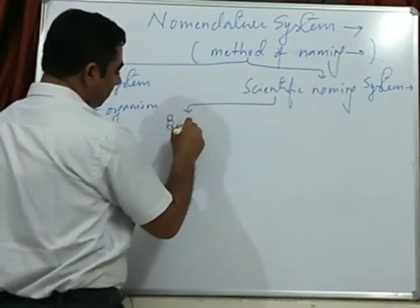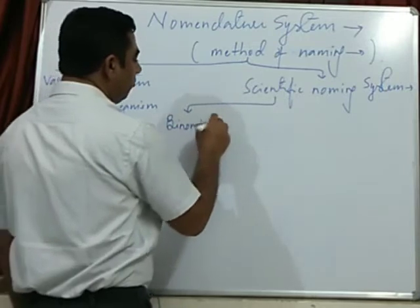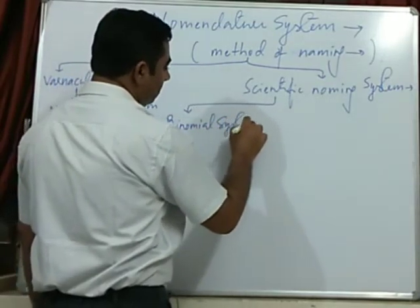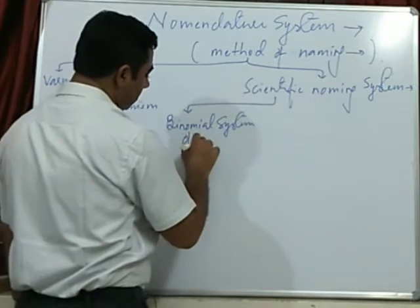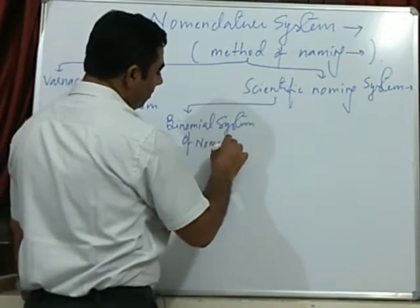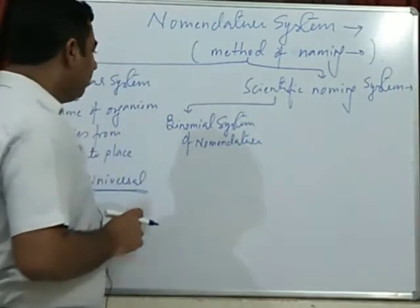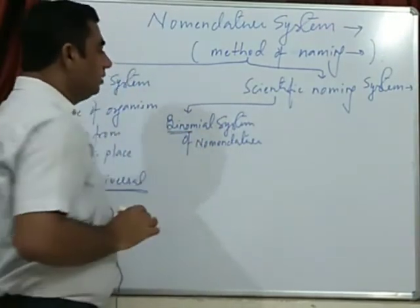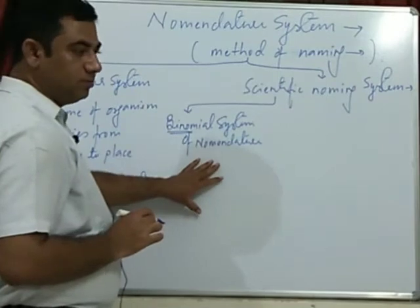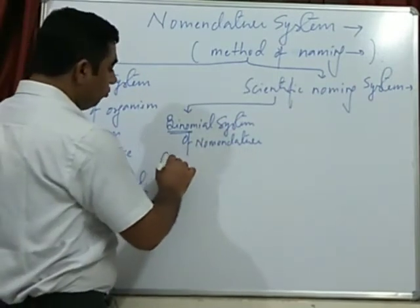The scientific naming system is binomial system of nomenclature. Binomial means the organism name consists of two words.